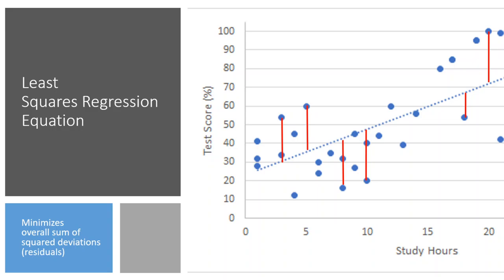Taking all of these red lines and squaring them, the least squares regression model finds the total sum of all these squared residuals. How can we minimize the distance — the summation of all those red lines? It moves the blue dotted line up and down to find where the total sum of all red line distances is minimized. That's why we call it the least squares regression model: it minimizes these red squared lines, finding the best blue dotted line that fits all data points with the least prediction error.